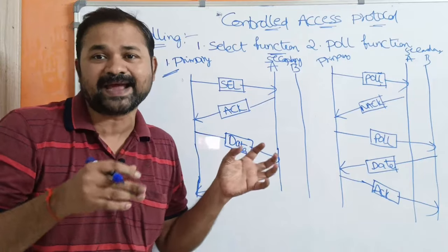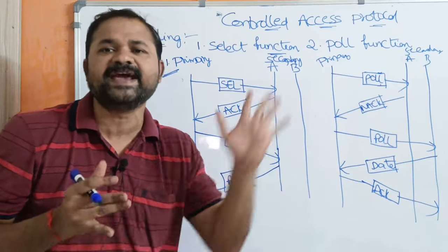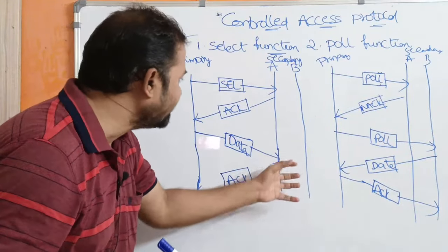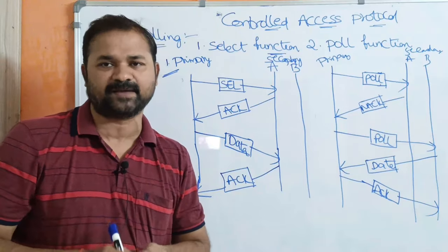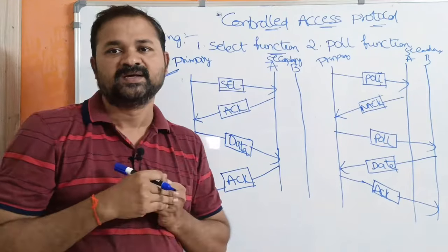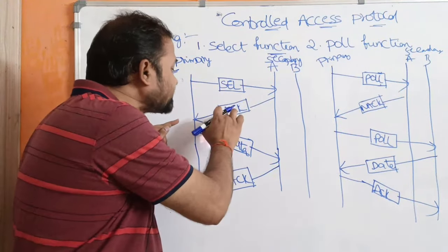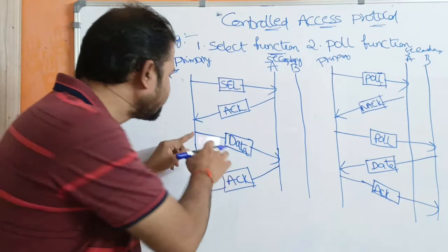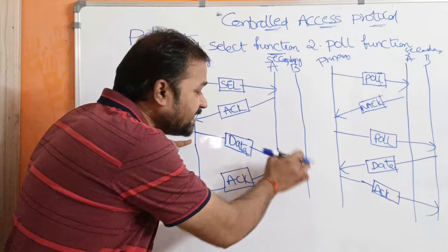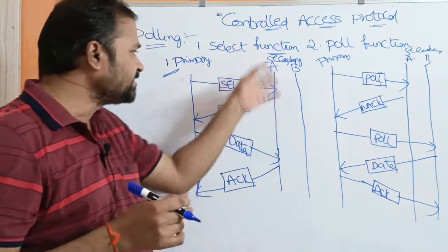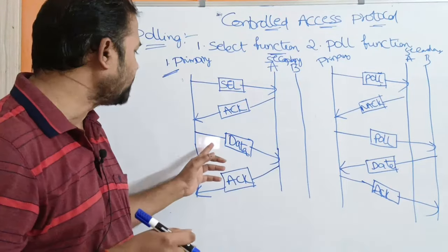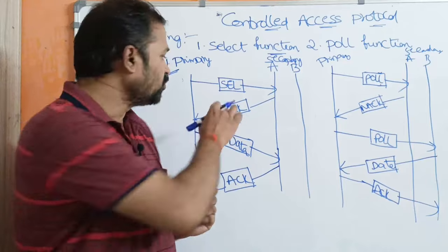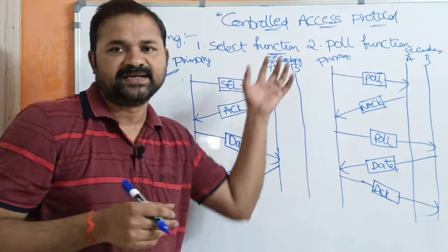After receiving the acknowledgement frame, the primary device knows that secondary device A is free, so it can send the data to A. A will then provide acknowledgement for the corresponding data. If A is busy, it sends a NACK (negative acknowledgement) to the primary device, and the primary device would then send a select request to another secondary device such as B. This is about the select function.